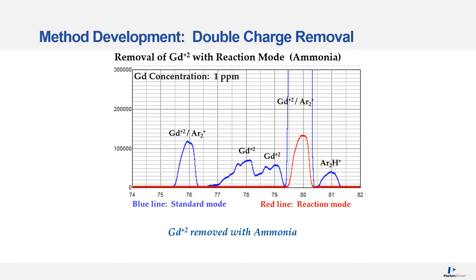Let's look at how to develop a method to remove double charges. In this example we're going to use 1 ppm gadolinium, which has a mass range of between 152 to 160 depending on the isotope, meaning its double charges are going to be between 76 and 82. In the graph on screen you can see a scan between 74 and 80 in both standard mode (blue line) and reaction mode (red line). The blue line clearly shows the double charge effects from gadolinium, while adding ammonia as a reaction gas — shown in red — gives a reduction of the gadolinium double charges. There is still a small hump at mass 80 which is due to argon₂.